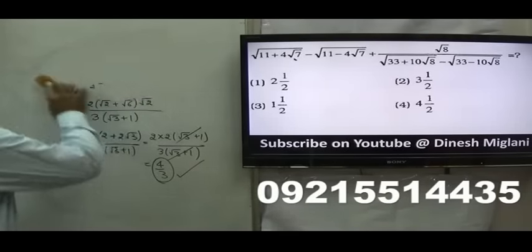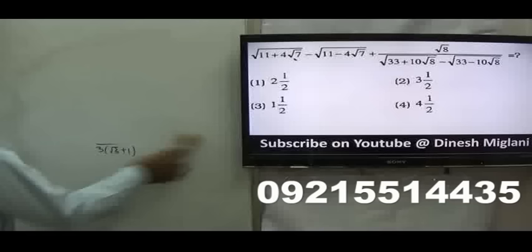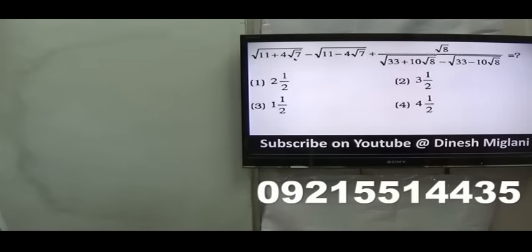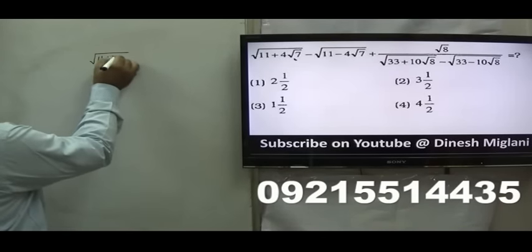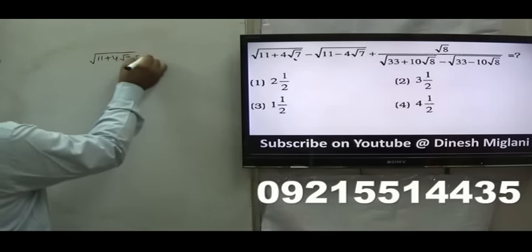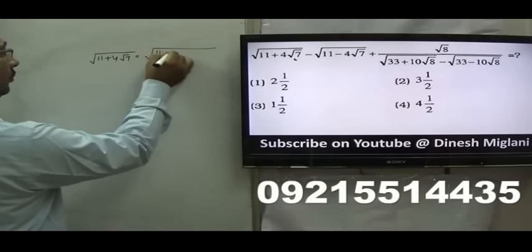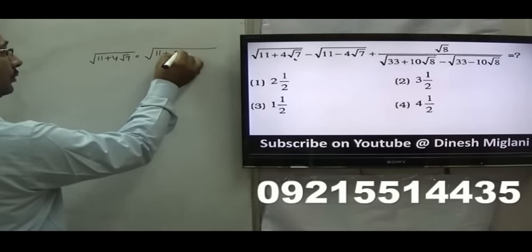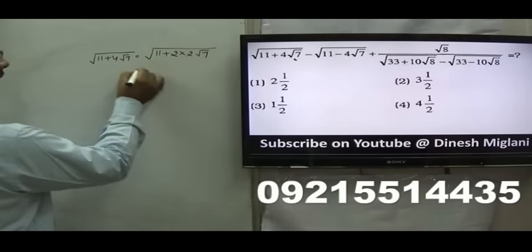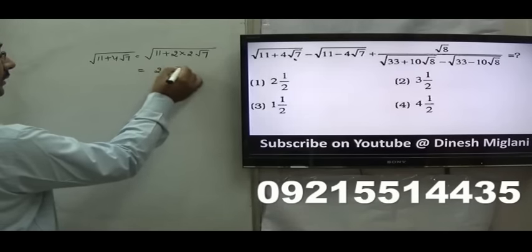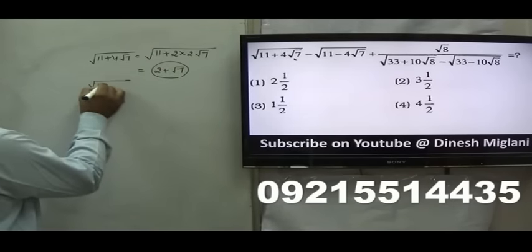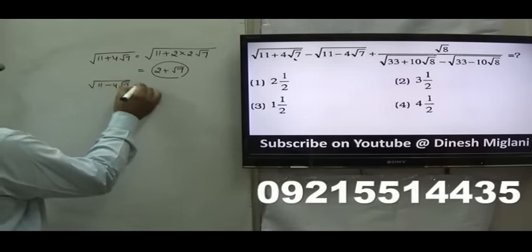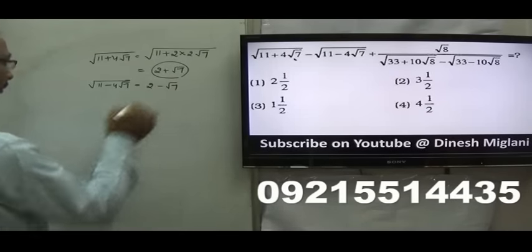The next question: in this question also, we have to complete the squares — that's the main thing. Let us first take √(11 + 4√7). I may take it as √(11 + 2·2·√7). So after simplification, that would be taken as 2 + √7. And √(11 − 4√7) would be taken as 2 − √7, or better as √7 − 2, because √7 is greater than 2.